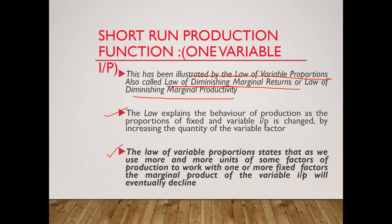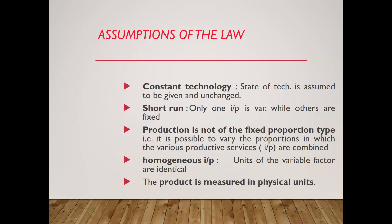Initially marginal product will increase and later it will decline, as I will show with the help of a curve. The assumptions of the law are: number one, constant technology — throughout production, technology will not change, we are not shifting to advanced technology. Short-run means only one input is variable, the rest of the factors are fixed. Production is not of fixed proportion type — it is possible to vary the proportion in which productive services are combined. Homogeneous input means units of the variable factor are identical, not heterogeneous — all units are similar. The product is measured in terms of physical units.